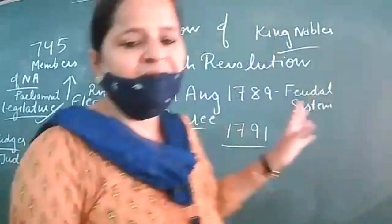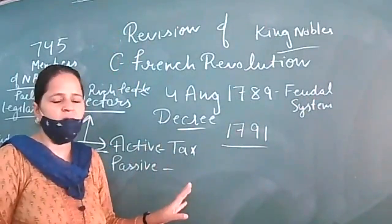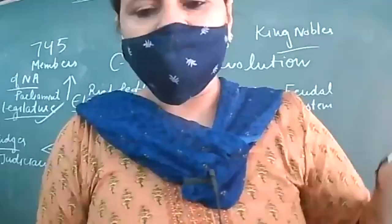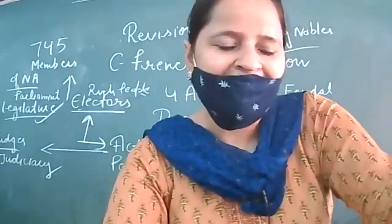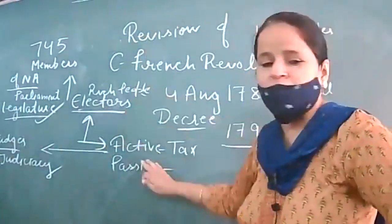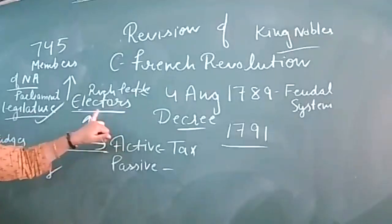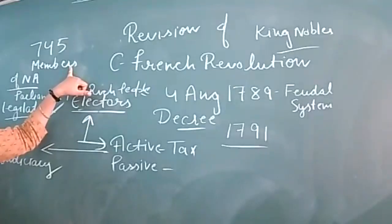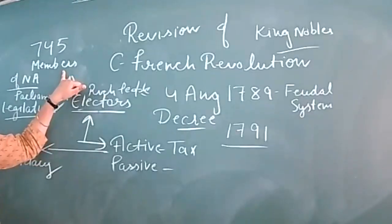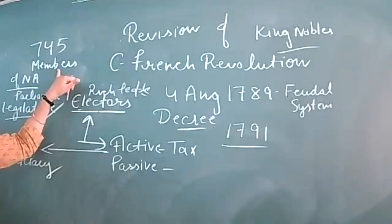Louis XVI was not satisfied with the new constitution. He was not happy, so he planned secret negotiations to attack. When the National Assembly members and people learned about this, active citizens and electors pressurized members to stop the king's activity. A proposal was passed in the assembly that the king had planned to attack.